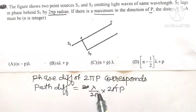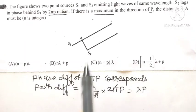The 2π cancels with 2π, so λp is the path difference between the light waves arriving at point P.